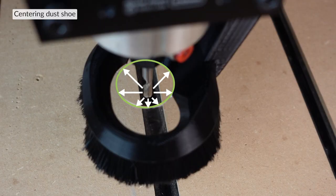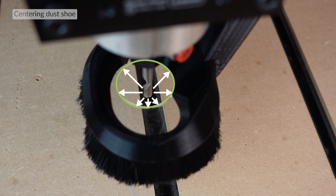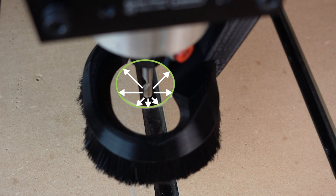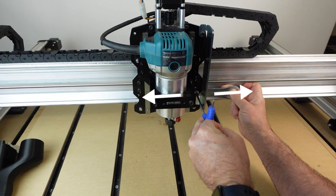One thing we want to do is double check and make sure that the dust shoe is centered within the mount. In this image you can see that it's not quite centered and we need to adjust that. Loosen the two bolts and that will allow left to right adjustment.